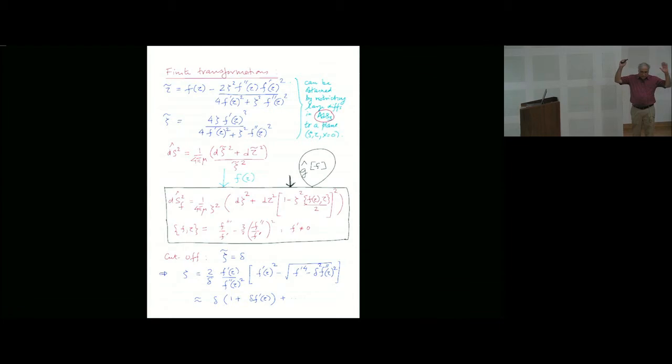The finite transformations were obtained by understanding similar things in AdS-3. So somehow one used AdS-3, knowledge of AdS-3, and where these finite transformations are known, restrict them to a plane, and all said and done, you can actually integrate those infinitesimal transformations to these finite form. So now you have this metric. This is AdS-2 in coordinates xi-twiddle and tau-twiddle. I make this large diffeomorphism, and the metric turns out to be this one.